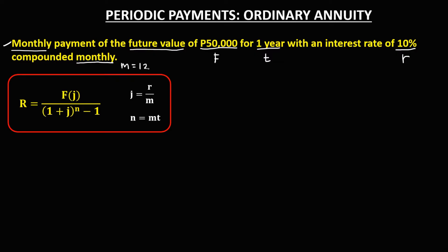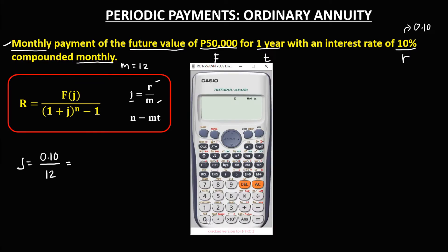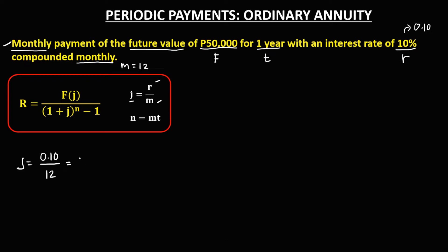M equals 12. First, we need to find the interest rate per period, that's J, equals R over M. The rate is 10%, converted to decimal that's 0.10, divided by M which is 12. So J equals 0.0083.